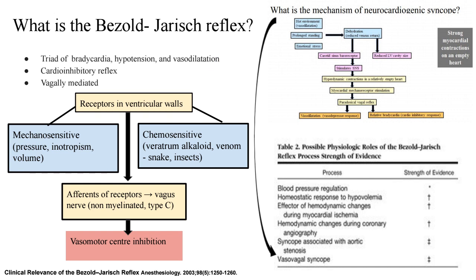Who are the players of this reflex? There are receptors in the ventricular walls which are both mechanosensitive and chemosensitive. Mechanosensitivity involves sensitivity to high pressure — as in severe aortic stenosis where intraventricular pressures are very high — or increased inotropism, and also low volume such as hypovolemia from dehydration. The chemosensitivity aspect involves sensitivity to certain alkaloids like veratrum alkaloid, which was classically used to first describe this reflex. Snake and insect venom also stimulates these ventricular wall receptors. The afferents are the vagus nerve — specifically the non-myelinated type C vagus nerve — which inhibits the vasomotor centre, producing bradycardia, hypotension, and vasodilatation: a pan-vagal response.